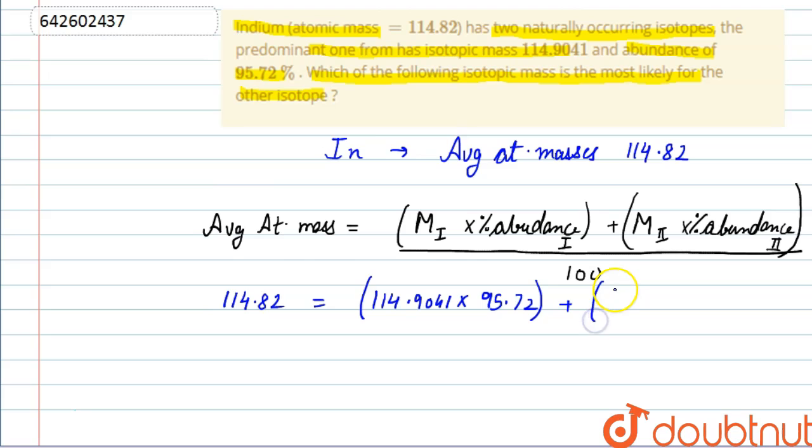And we have to find the mass of second isotope. Its abundance will be 100 minus 95.72, so it will be 4.28 percent. This is multiplication, divided by 100.